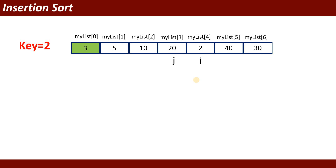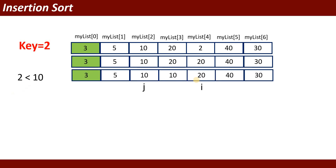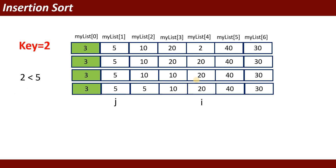At index 4, the value is 2. Key gets the value 2. We check: is 2 less than 20? Yes, true. The value of j (20) shifts right. Then we check: is 2 less than 10? Yes, true — j shifts to j+1, placing 10 at my_list[3]. Next, j is 5: is 2 less than 5? Yes, true — 5 shifts to j+1, so 5 appears at my_list[1] and my_list[2].